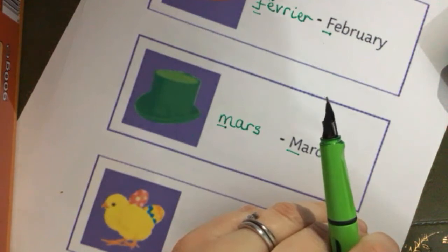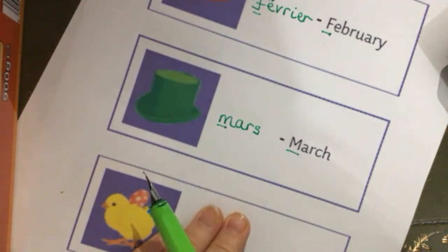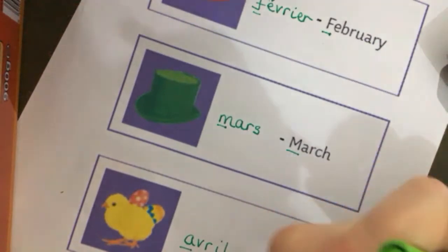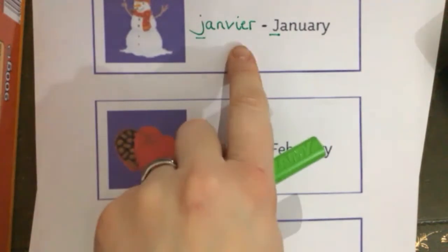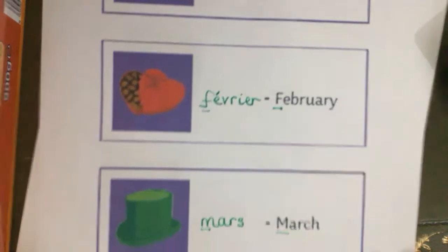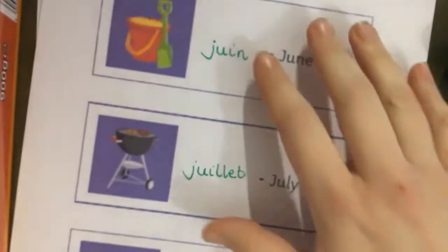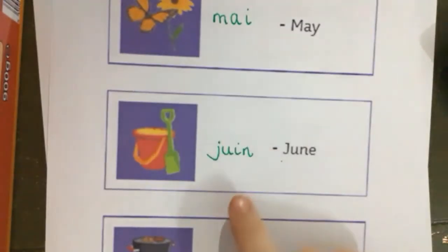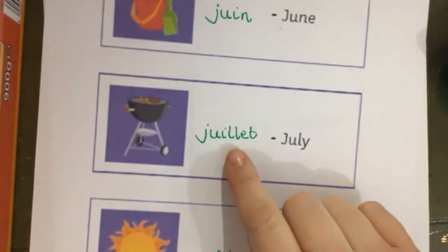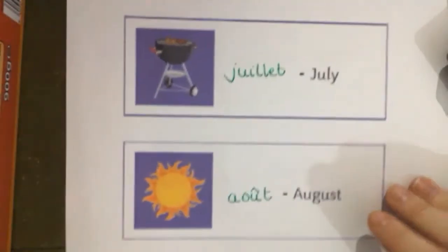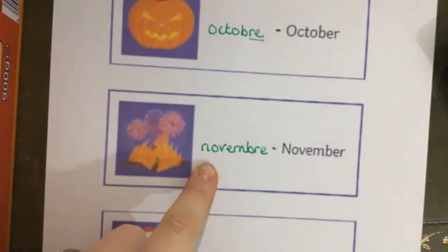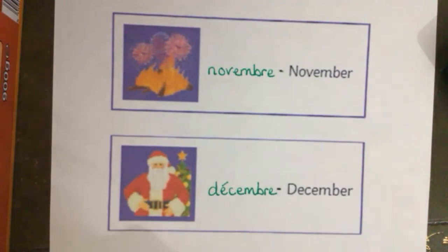Let's go through and I'll say each month — you can repeat at home. Make sure you've got all the words written on your list; if you need to pause or rewind, do that now. Ready? Janvier, Février, Mars, Avril, Mai, Juin, Juillet, Août, Septembre, Octobre, Novembre, Décembre — and that's it! Twelve new words for you to learn: the twelve months of the year in French.